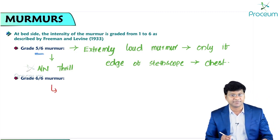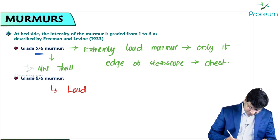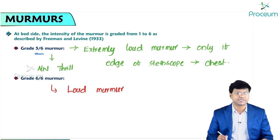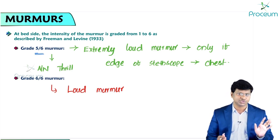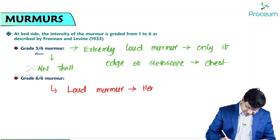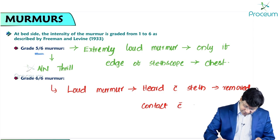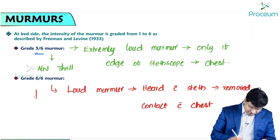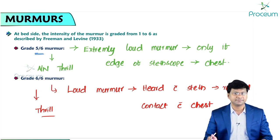Grade 6/6 is an exceptionally loud murmur that can be heard even when the stethoscope is just removed from contact with the chest wall, and it is also accompanied by a thrill. The key difference between grade 5/6 and 6/6 is that grade 6/6 can be heard without direct stethoscope contact.